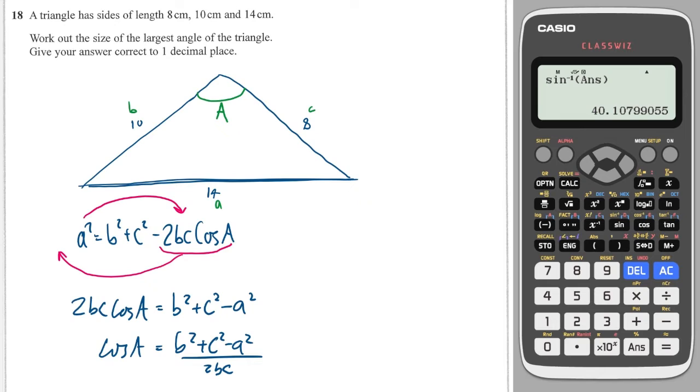So now I can sub those values in so I get cosine of A is equal to 10 squared plus 8 squared minus 14 squared all over 2 times 10 times 8. So in my calculator I'll press the fraction button first, I'll do 10 squared plus 8 squared minus 14 squared all over 2 times 10 times 8 and I'll get minus 0.2.